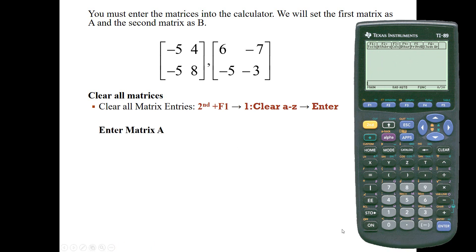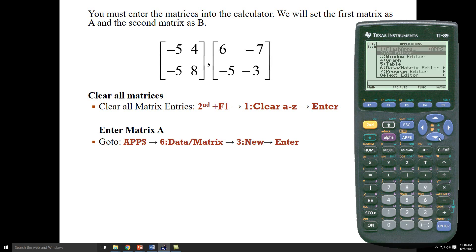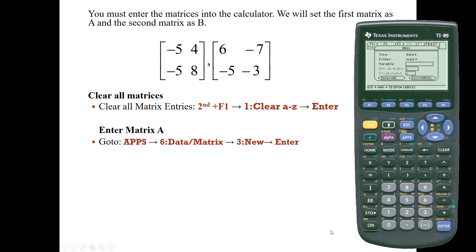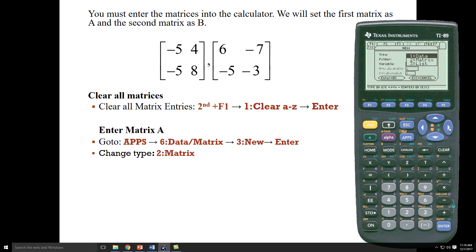Next, we'll enter matrix A. In order to do so, we'll go to apps. We'll scroll down to the sixth option, which is the data matrix editor. We'll press enter. Next, we want to create new matrices, so I'll scroll down to the third option and press enter. Next, we'll change our type to matrix. So I'll use the right arrow, I'll scroll down to matrix, and I'll press enter.